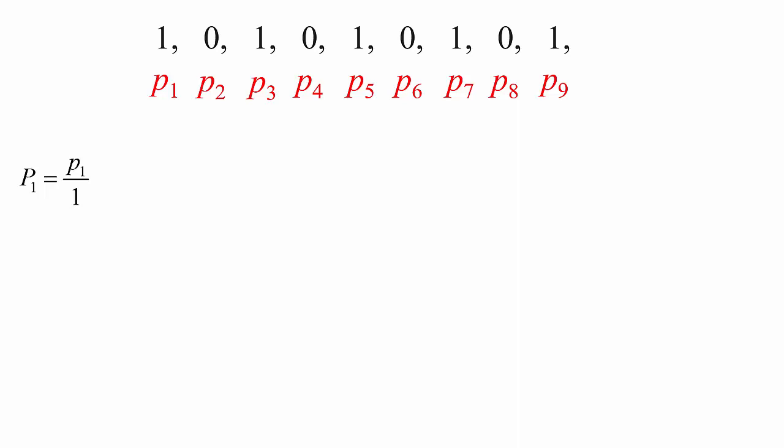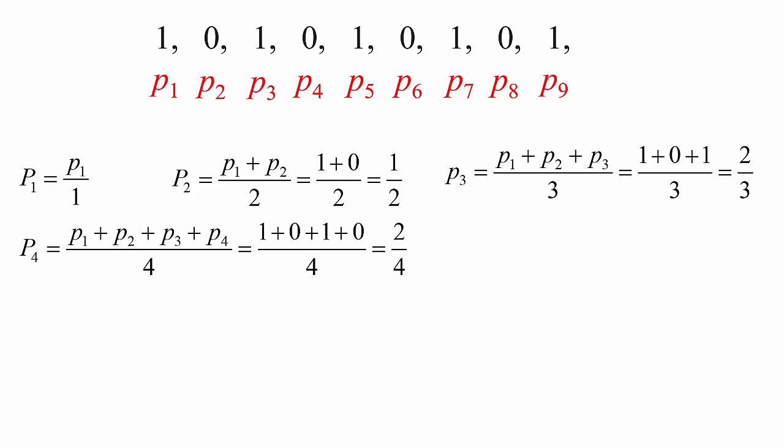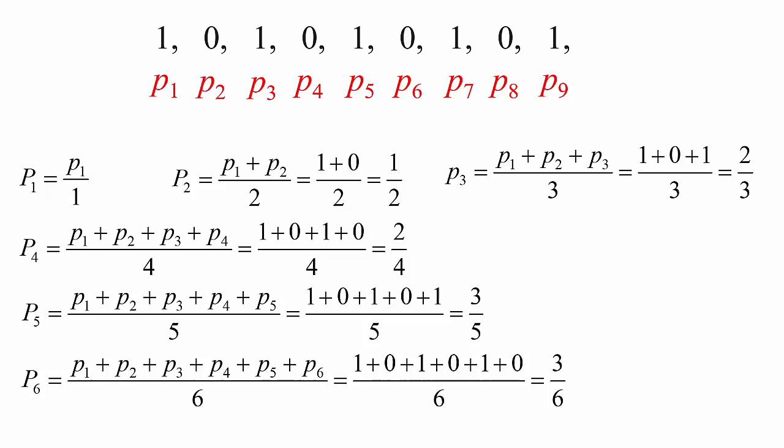So here are the partial sums that we found. Let's work out the arithmetic mean of each sequence of partial sums. The first partial sum is 1, so the mean, of course, is just P1 divided by 1, because there's only one term. The second partial sum means the arithmetic mean of the first two partial sums, which is P1 plus P2 over 2, and that comes out to be a half. If we do the same thing for the third partial sum, as you can see, that comes out to be two thirds. The fourth one comes out to be 2 over 4, which of course simplifies to a half. The fifth to three fifths, and so on. And the sixth partial sum comes out to be 3 over 6 or a half.